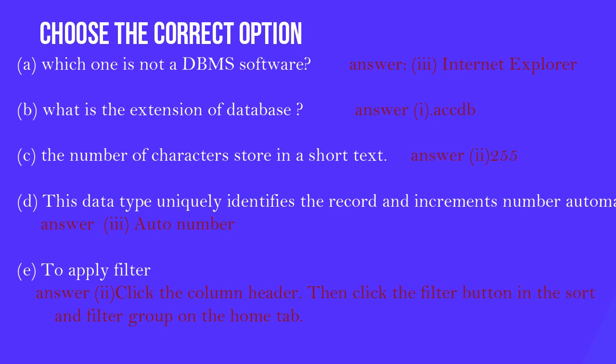C: The number of characters stored in a short text - second option, 255. D: This data type uniquely identifies the record and increments number automatically - third option, auto number.